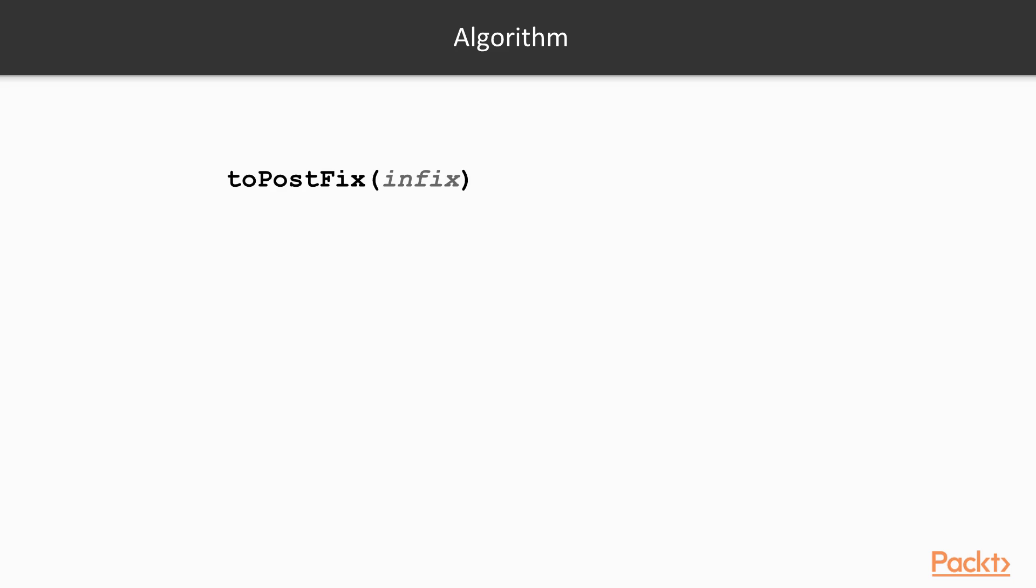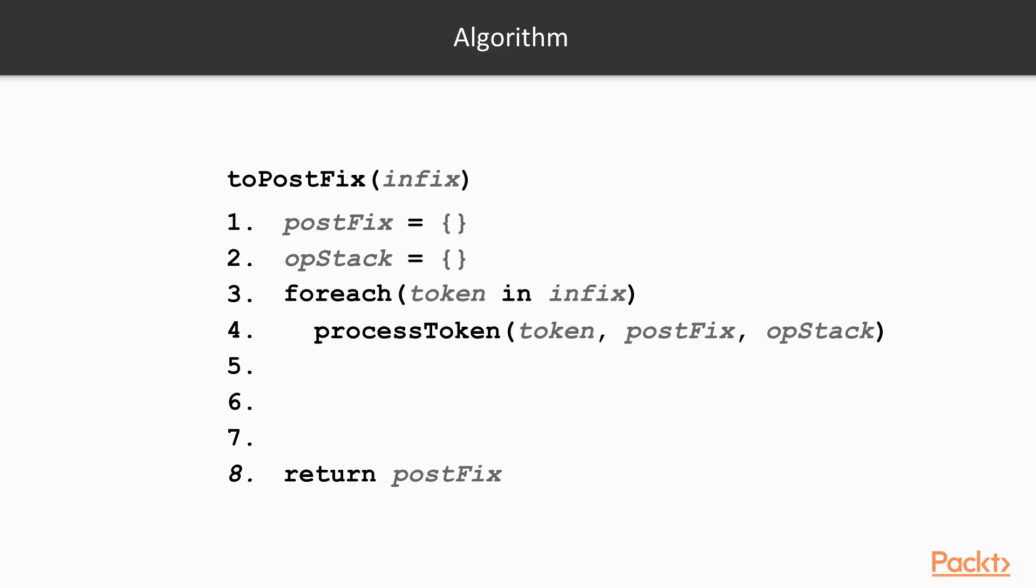After seeing some examples, let's try to write some pseudocode. Let's call the function toPostfix and make it accept our infix expression. We can start with two empty lists, one to hold our postfix expression and another to be our operator stack. In the end, we just return our postfix list. We create a loop which goes through every token found in our infix expression. We process each token, passing the operator stack and the postfix list. Once we have processed the entire infix expression, we need to flush the operator stack. To do this, while this stack is not empty, we pop the top of the stack and add the operator to the postfix expression.